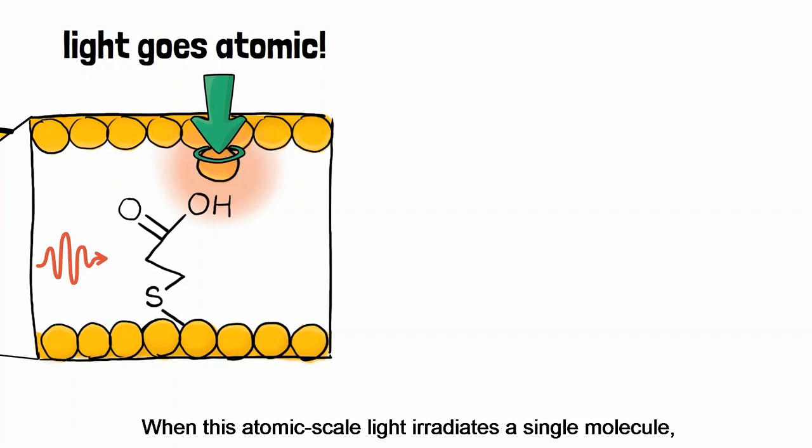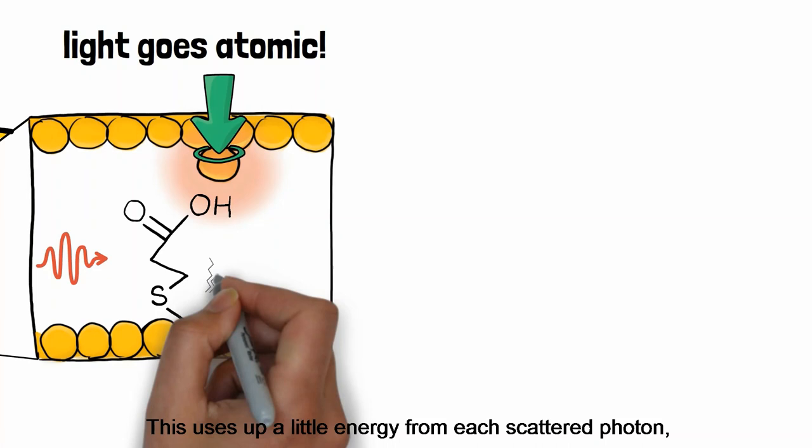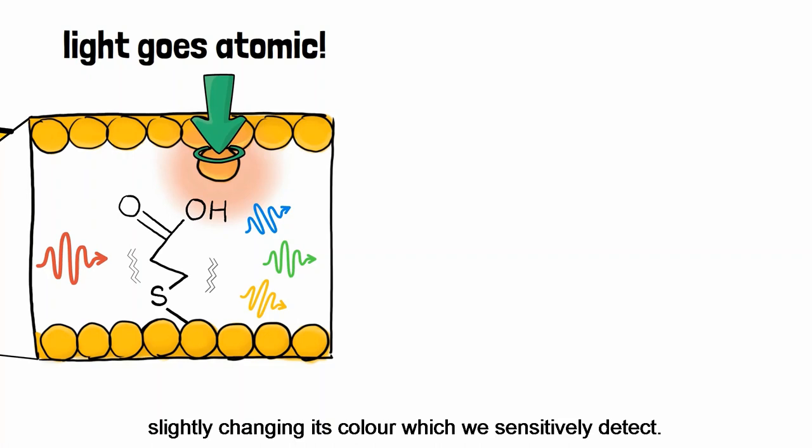When its atomic scale light irradiates a single molecule, it can occasionally set molecular bonds vibrating. This uses up a little energy from each scattered photon, slightly changing its color, which we sensitively detect.